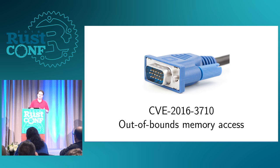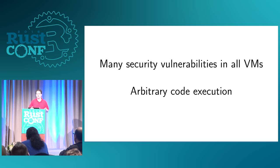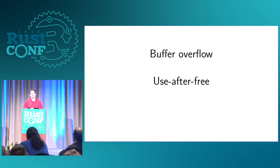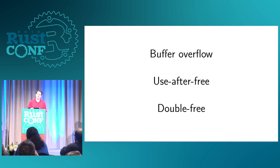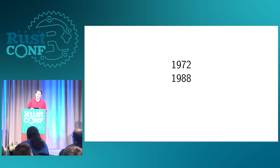There have been major security vulnerabilities in all virtual machines. All the worst ones tend to be arbitrary code execution. These are often caused by buffer overflows, by use-after-free vulnerabilities, or by double-free issues. To emphasize this: the initial discussion of what a buffer overflow was happened in 1972. In 1988, the very first exploit of a buffer overflow occurred. It's 2016, and we're still dealing with this.